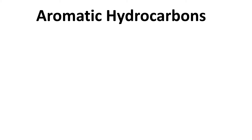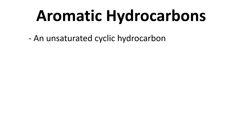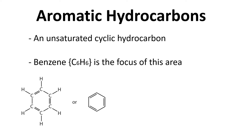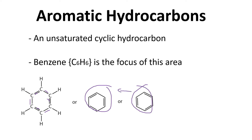Let's take a look at some aromatic hydrocarbons. These are unsaturated cyclical hydrocarbons, and benzene, or C6H6, is the focus of this area. Now another way to write that would be showing the double bonds, but a different version could exist where you have a double bond here, here, and here — just kind of turned a bit. Since both of these essentially exist, we can draw it with a circle inside the ring.